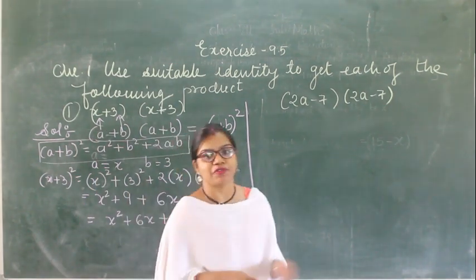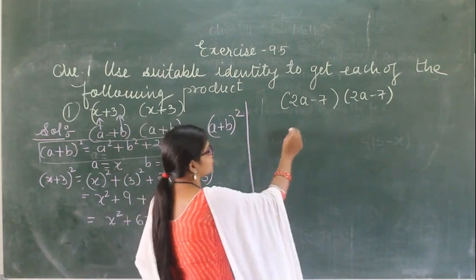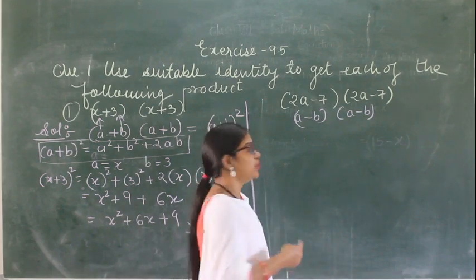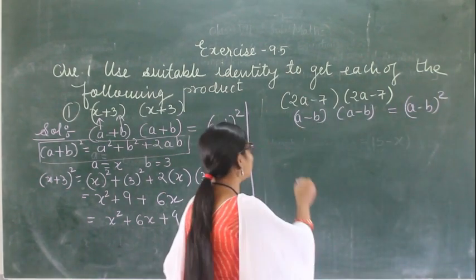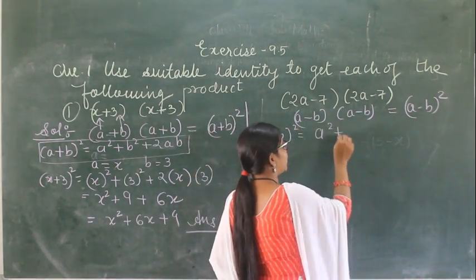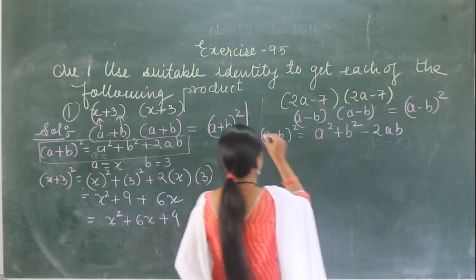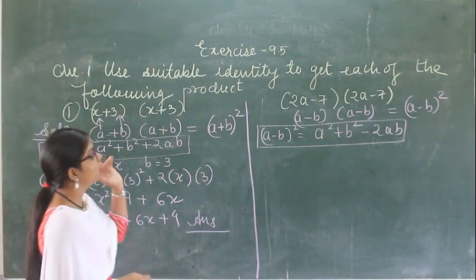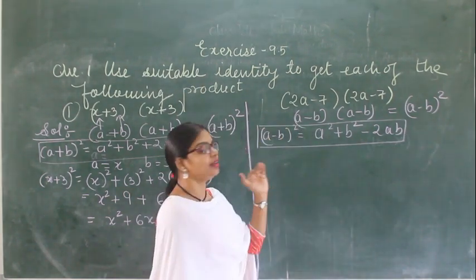Similarly, in the second question you have to check which identity is going to be used. Here you can see this is in the form of (a minus b) and (a minus b). So (a minus b) into (a minus b) will be (a minus b) whole square. The formula for (a minus b) whole square is: a square plus b square minus 2ab. Note the little difference here — for (a plus b) all terms are positive, but for (a minus b) we use minus.